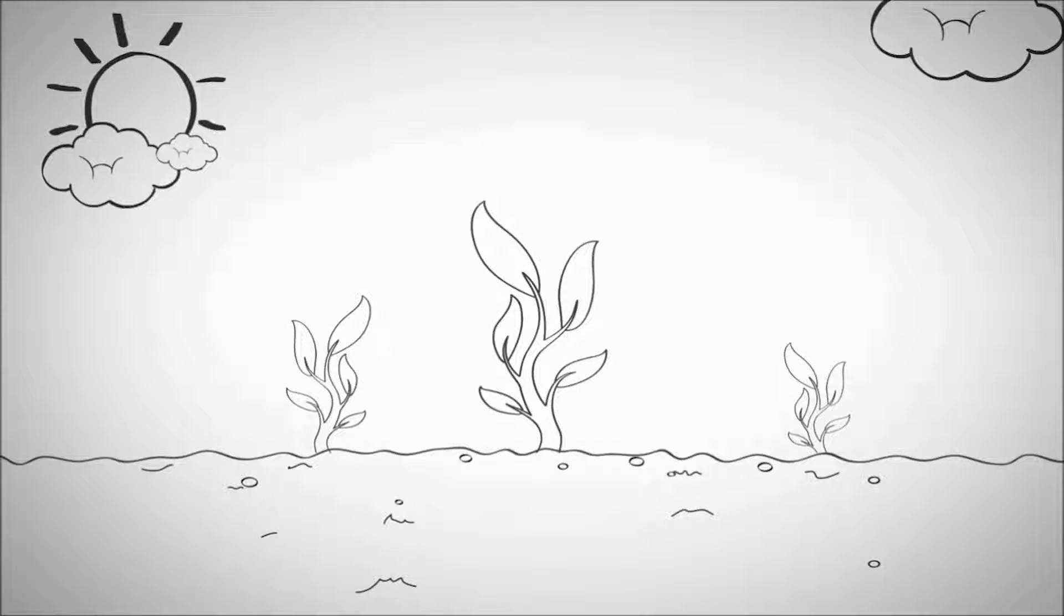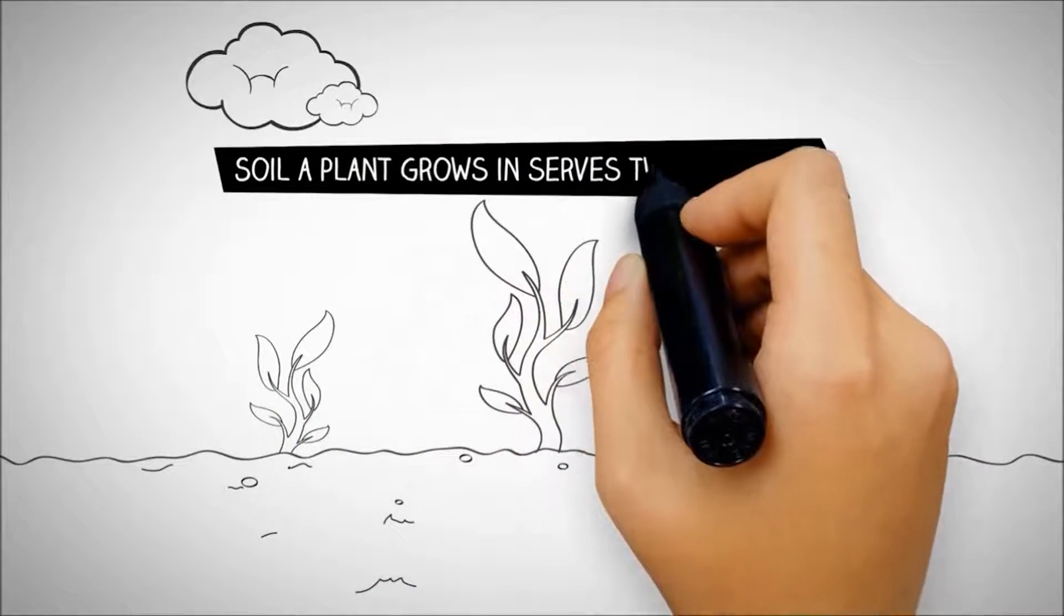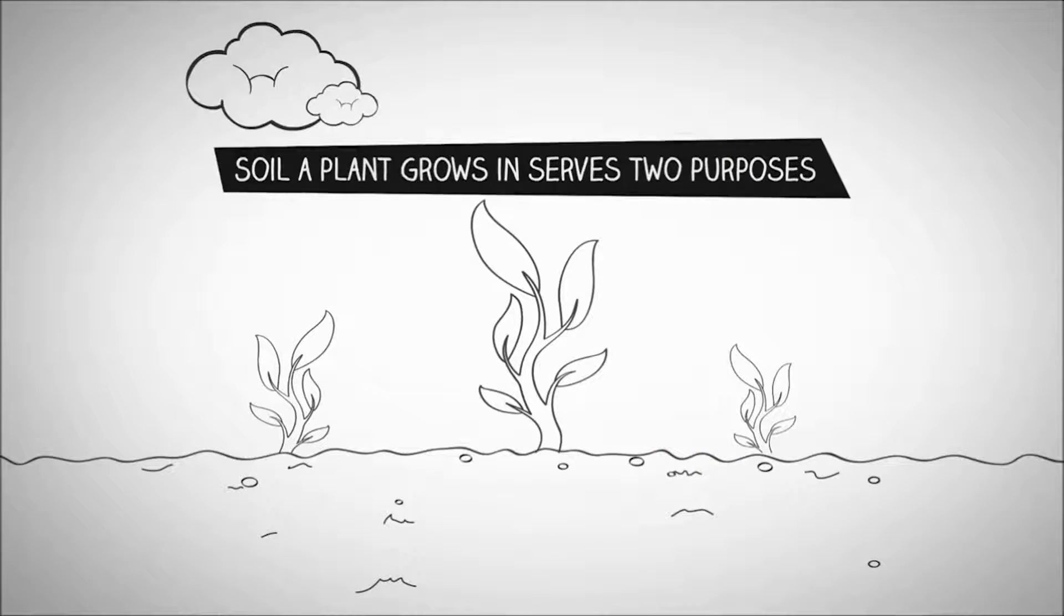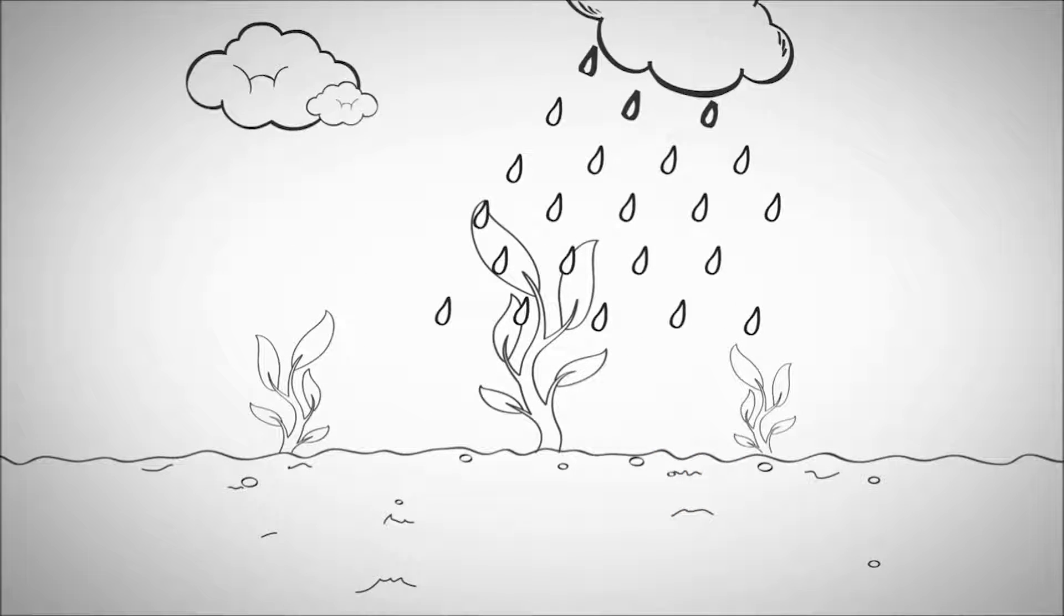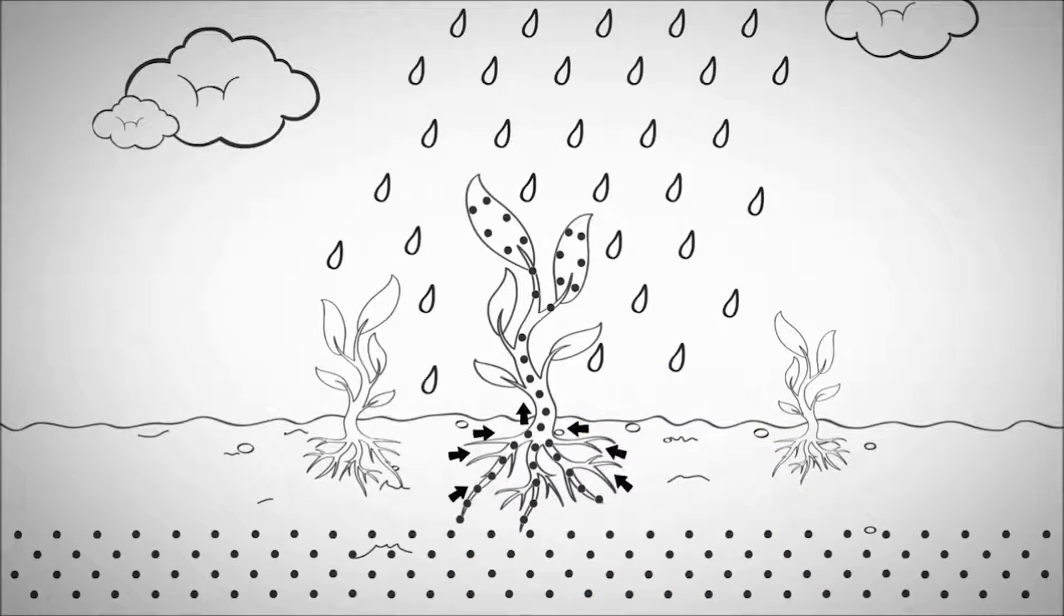Wait, back up. In nature, the soil a plant grows in serves two purposes. One, it anchors the plant from above ground hazards. Two, to provide the plant with nutrients it needs to keep growing.